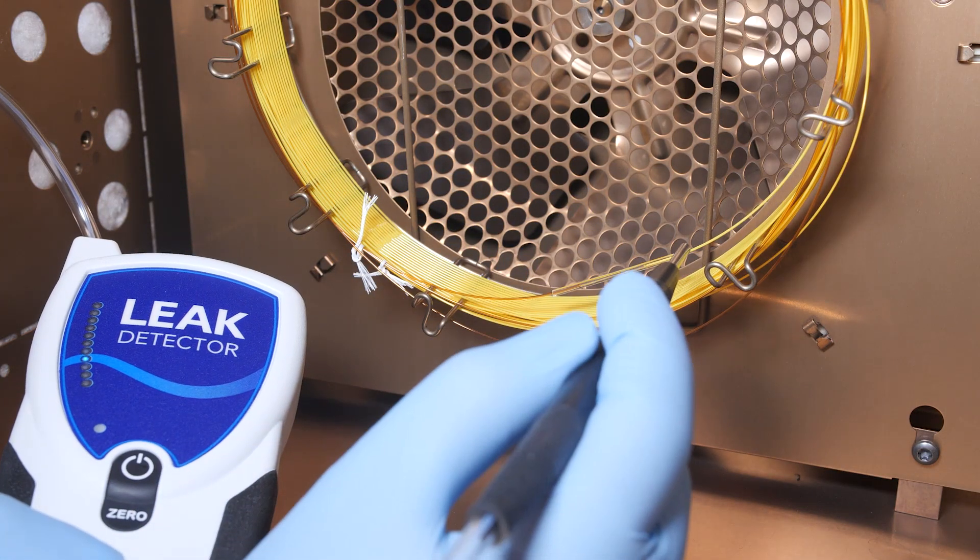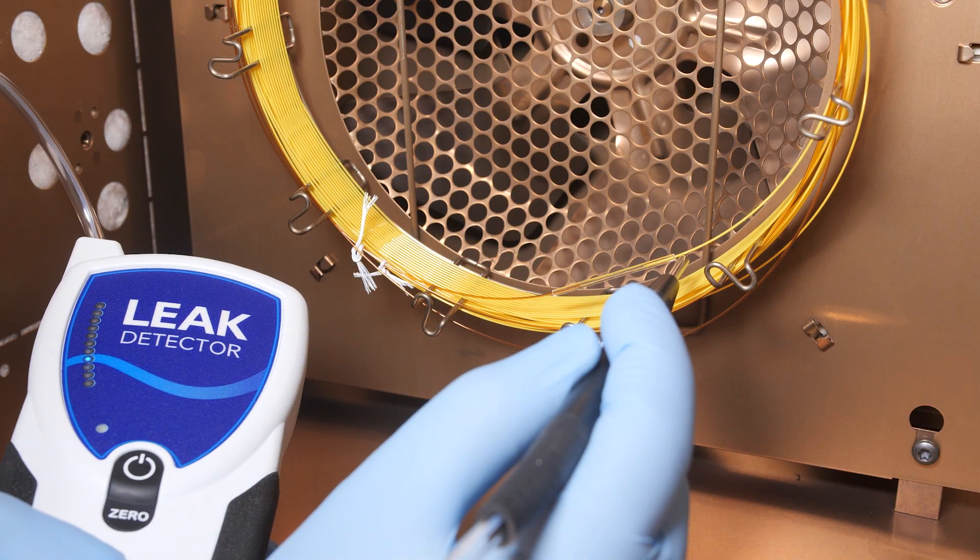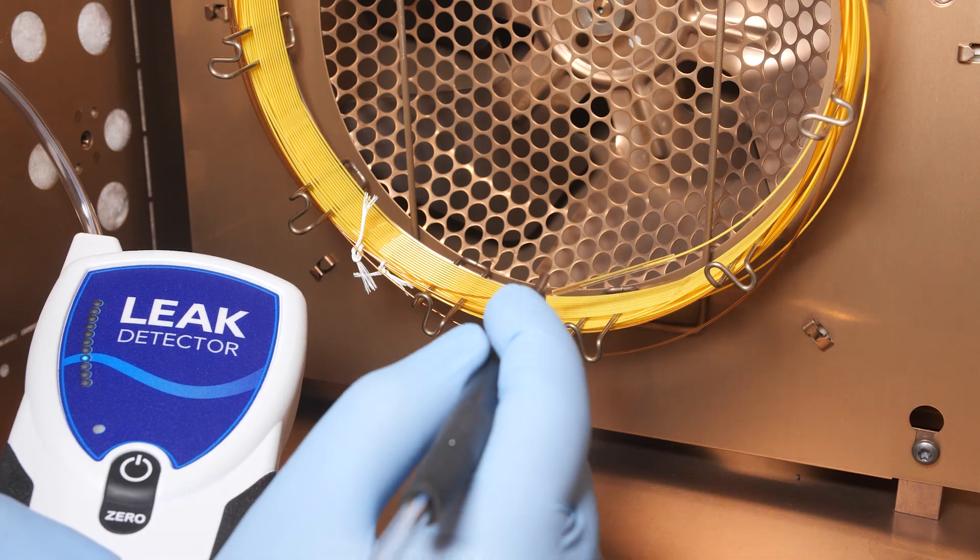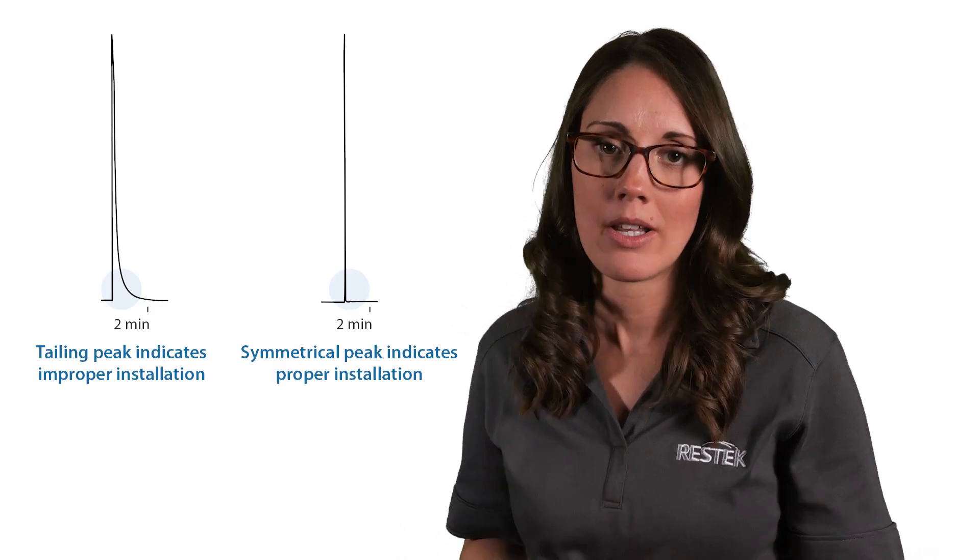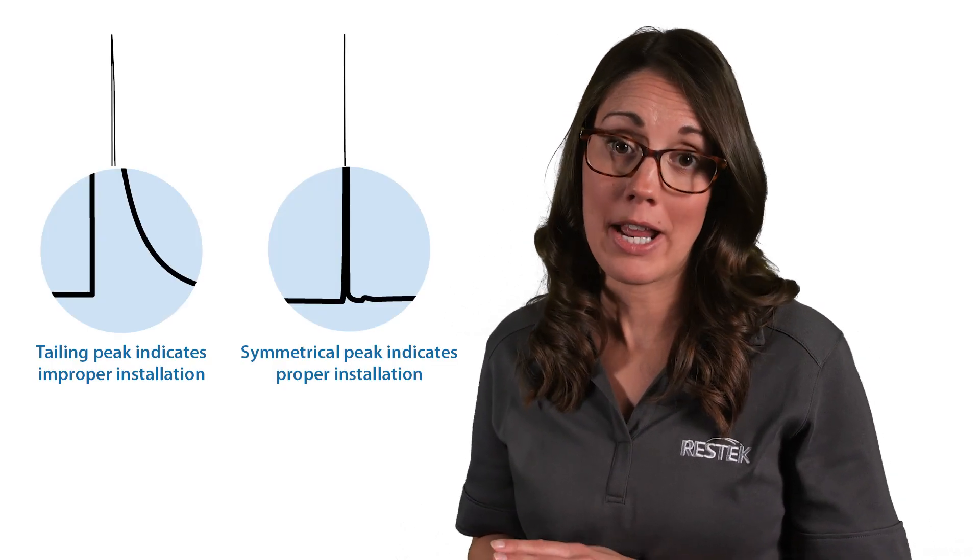Leak check the connections before and after the column is heated using an electronic leak detector. Test the integrity of the connection by injecting an unretained compound and carefully inspect the peak shape. Symmetrical peaks indicate a proper connection.